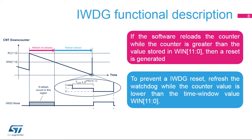This diagram illustrates how the Independent Watchdog operates. When the down counter reaches zero, the Watchdog reset is activated — this happens when the application software did not refresh the Watchdog on time. If the software refreshes the Watchdog while the down counter is greater than the value stored in the window register, a reset is also generated. To prevent a Watchdog reset, the refresh must occur when the down counter value is greater than zero and lower than the window value.